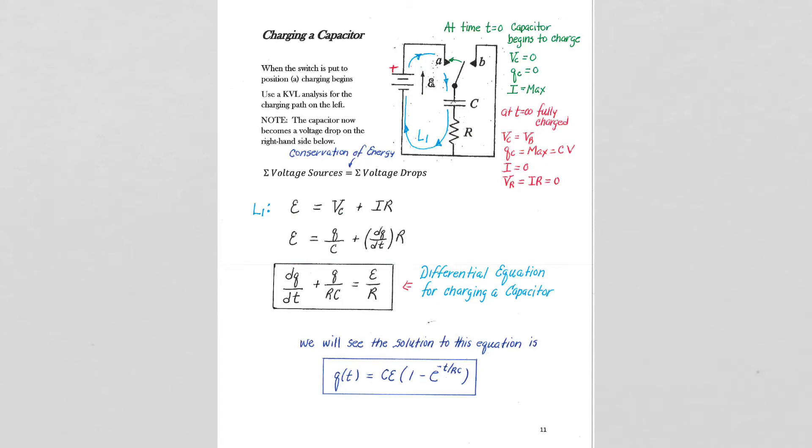We're now going to look at charging a capacitor in more detail. The annotations that I have over here to the right are based on discussions we've already talked about. We've talked about what happens right at time t equals 0 when the switch is closed and the battery begins to charge the capacitor.